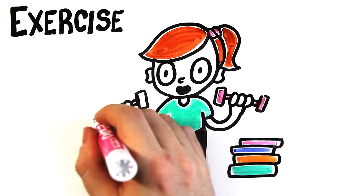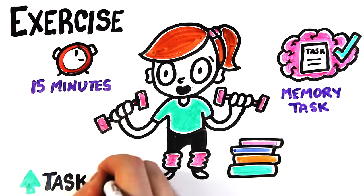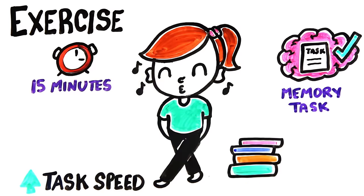Try a mini-workout. Studies show that those who've worked out for 15 minutes and then complete a memory task complete tasks significantly faster than those that haven't exercised. Even a simple walk can make a difference.